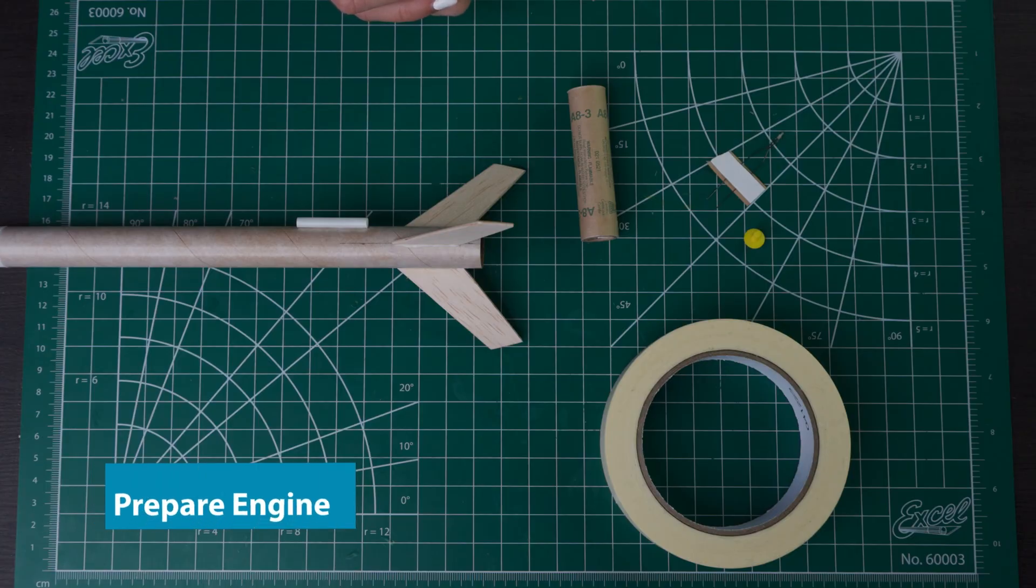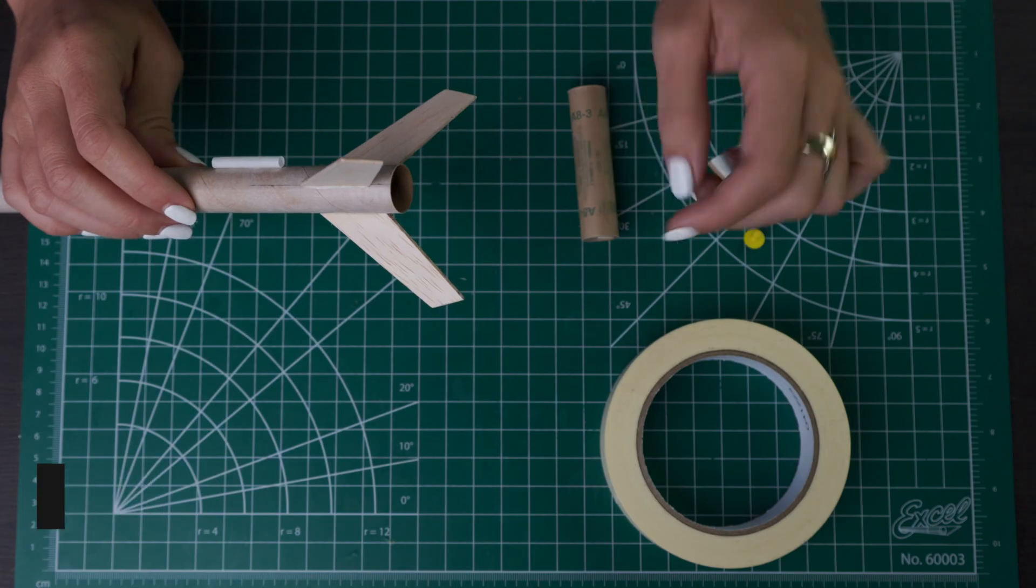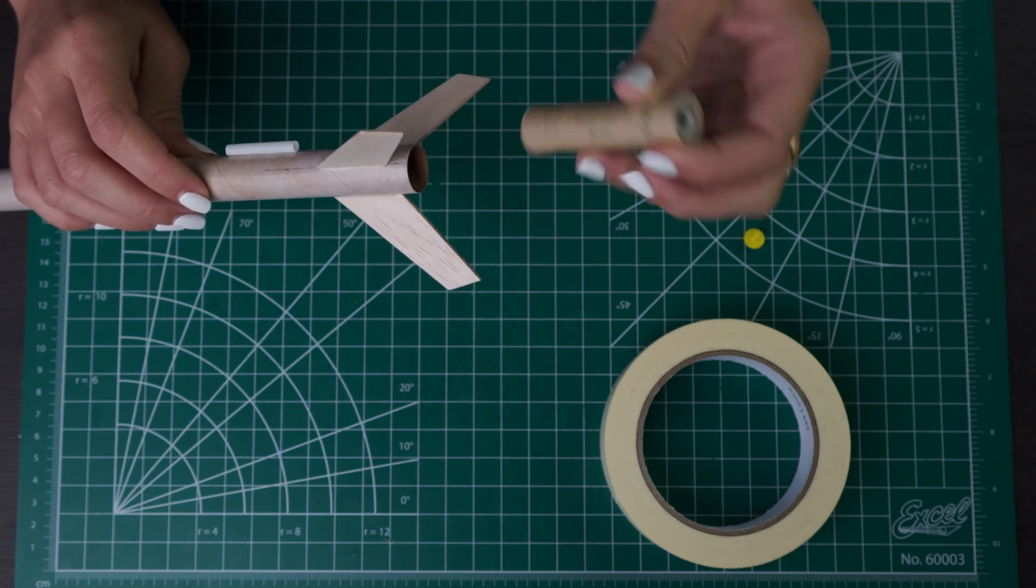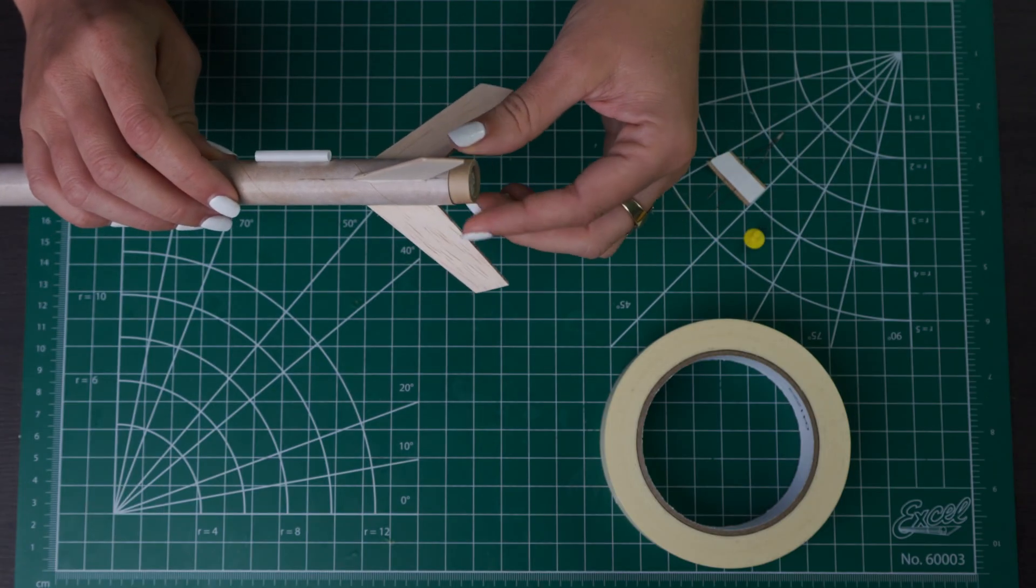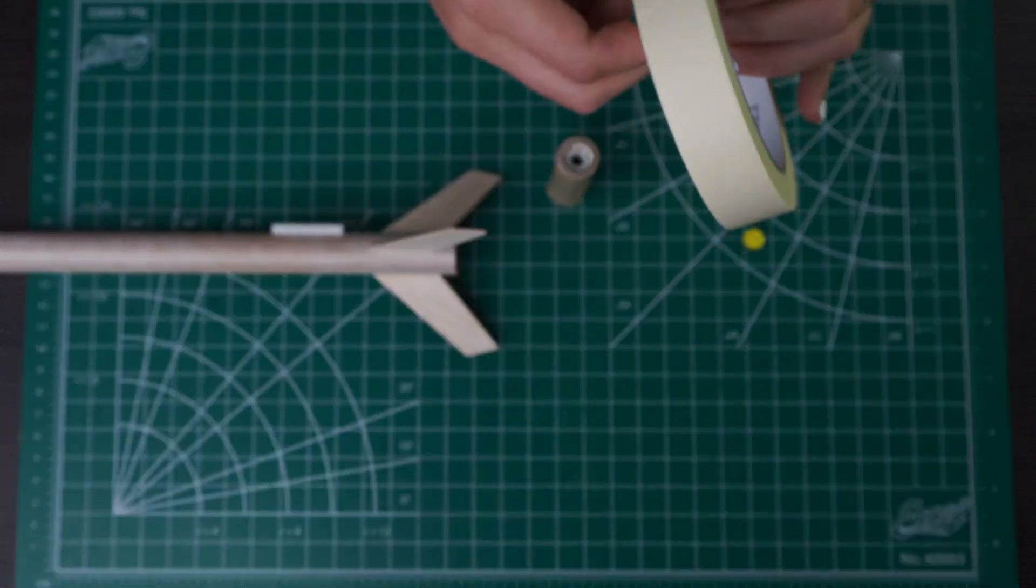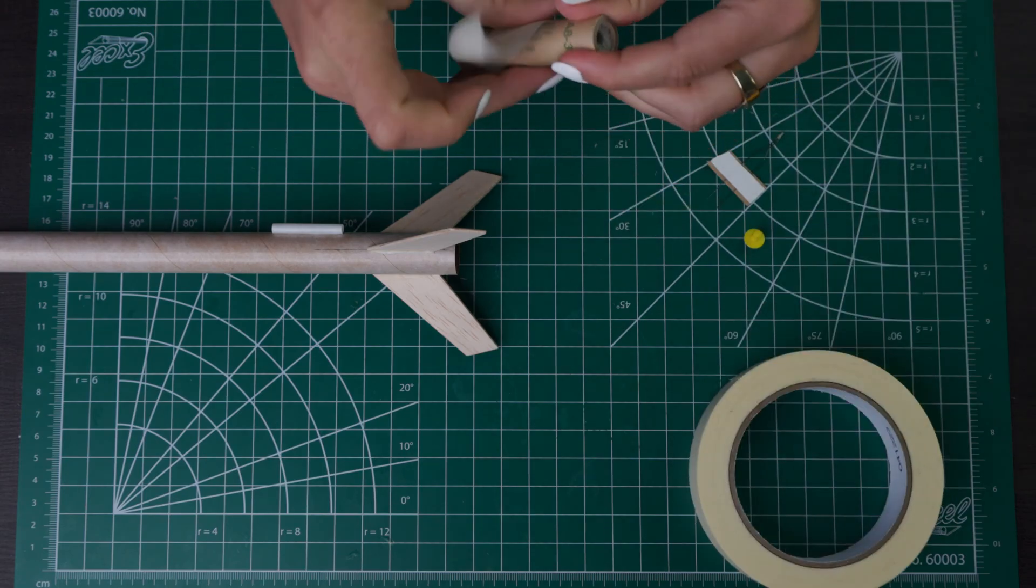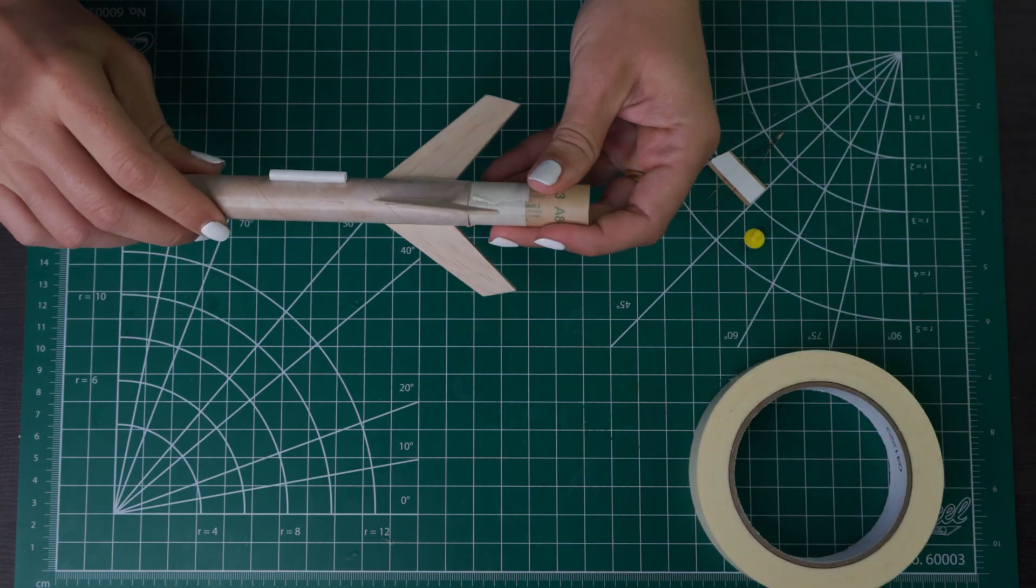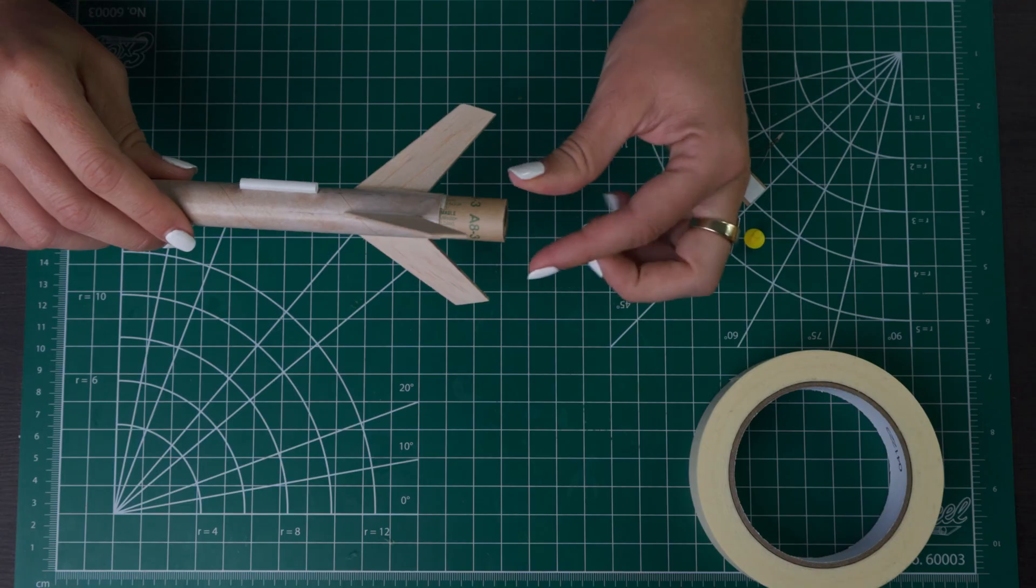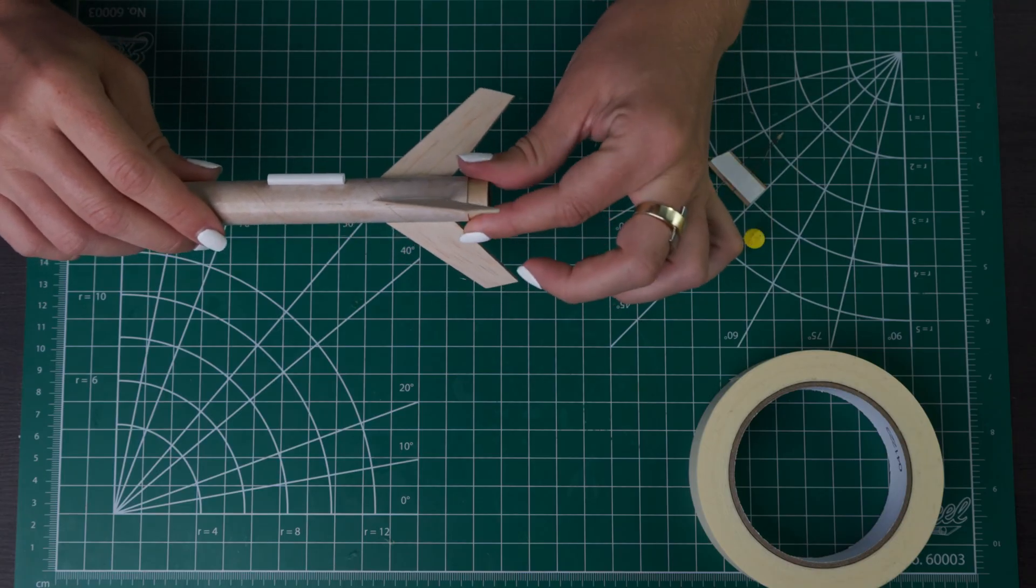For our final step for preparing for launch we're going to put an engine in. In this rocket the engine goes in and it's just a friction fit. But you can tell when we put it in here it's pretty loose. So we're going to add some masking tape around the engine to make that tighter. Now when we put it in it's going to be a nice snug fit and we want to make sure that's staying in there.